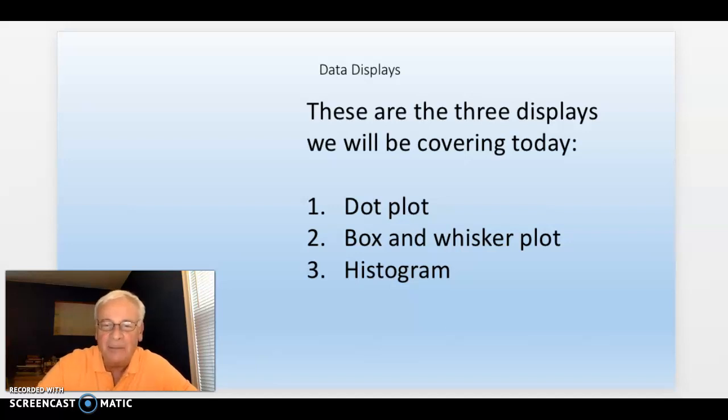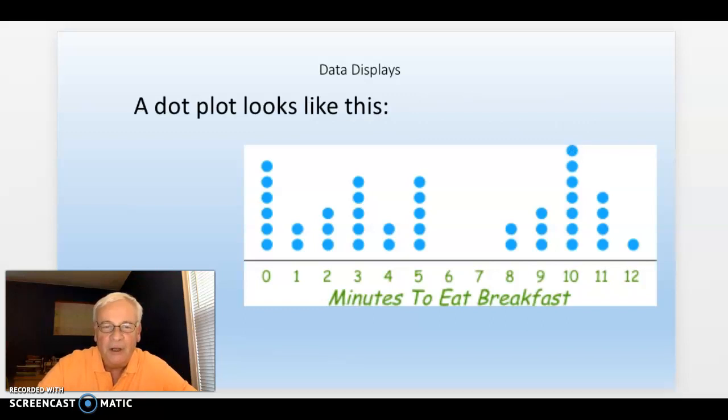A dot plot looks like this. There's a dot on every point, and when it repeats, you just stack them on top of each other.